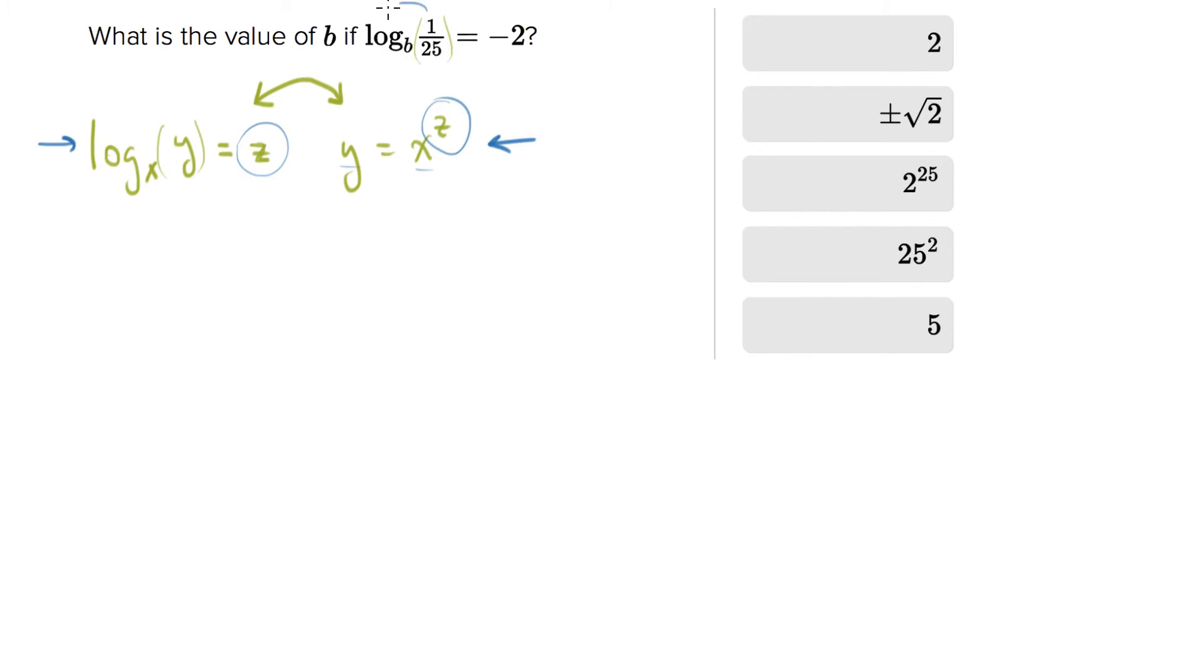Take the base b, raise it to the negative two power. So b to the negative two, and that should equal what was in the parentheses for that log. So 1 over 25 equals b to the negative two. Now this is just an algebra problem.